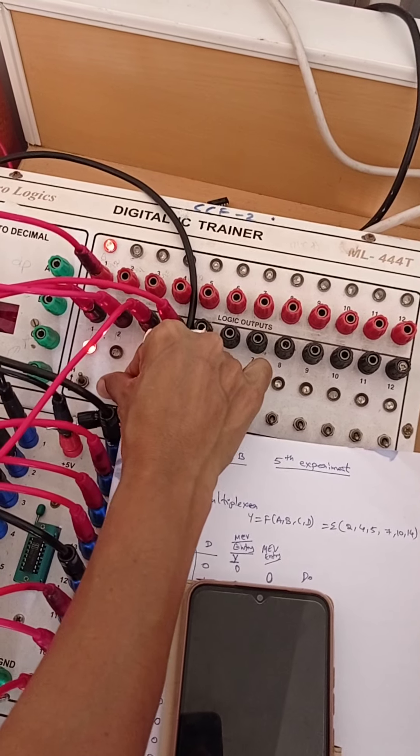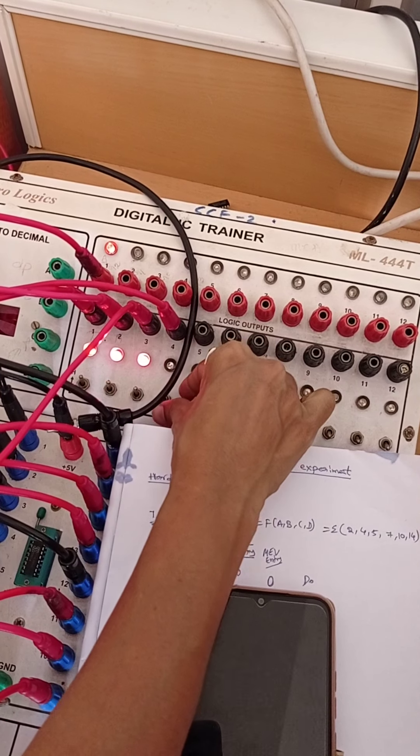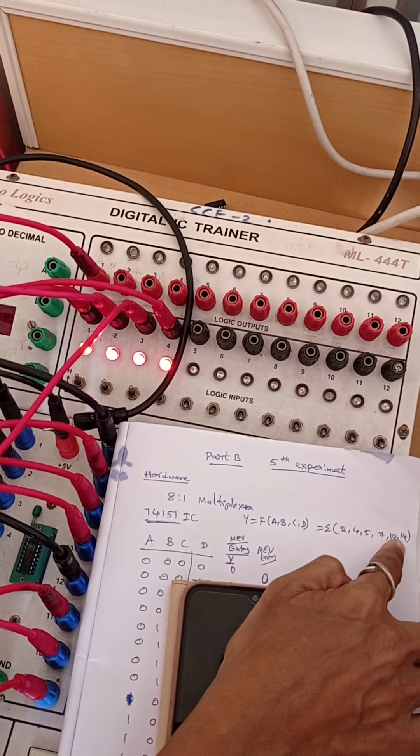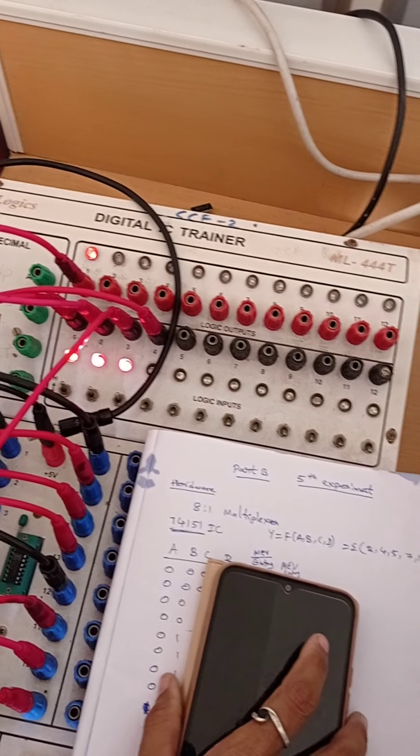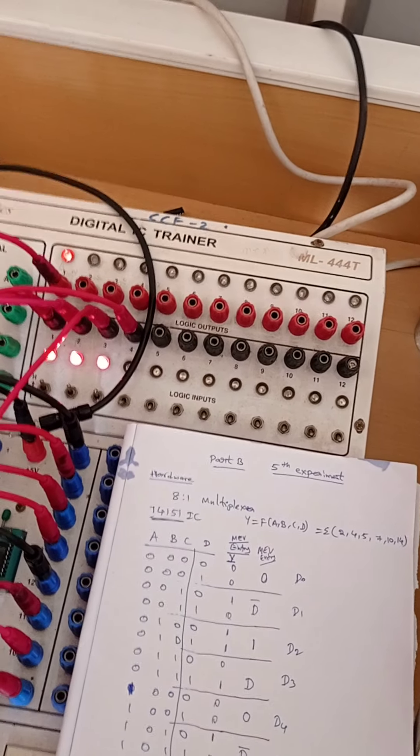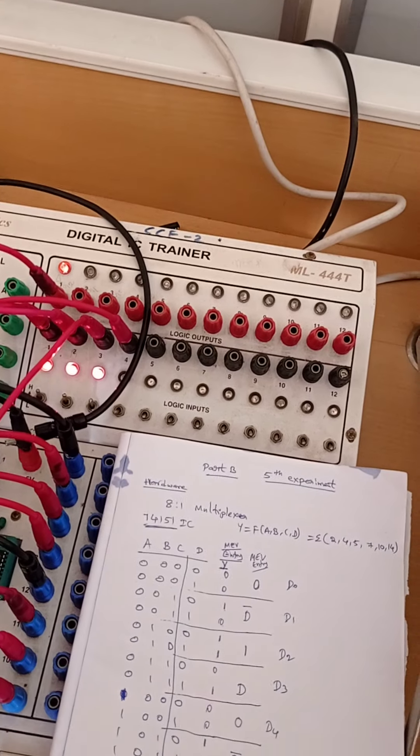Next for all combinations it should be low, and for only 14 it should be high. That means this is the 14, high. This is how to design the 8 to 1 multiplexer and check the output.